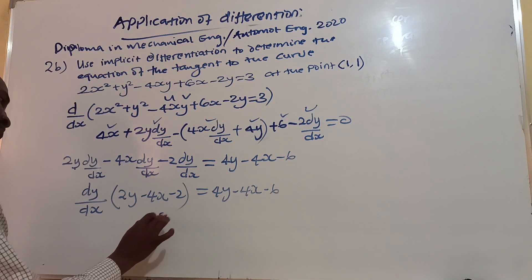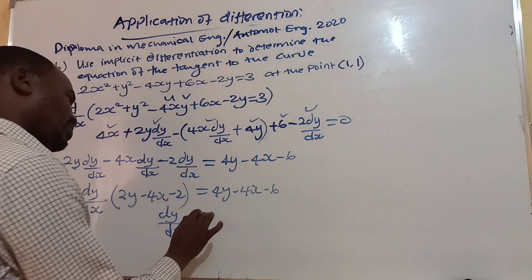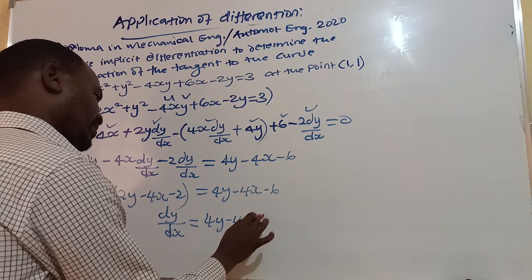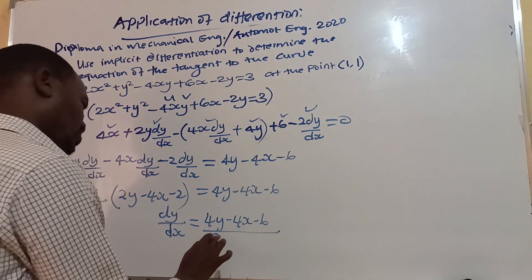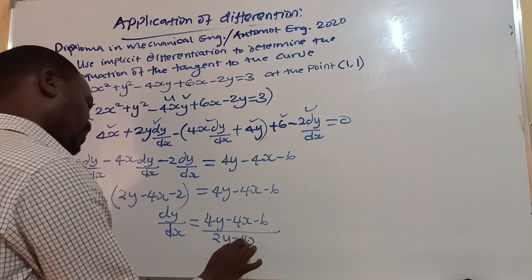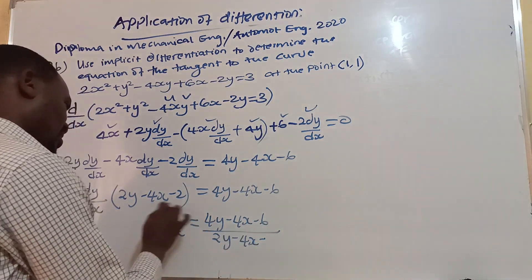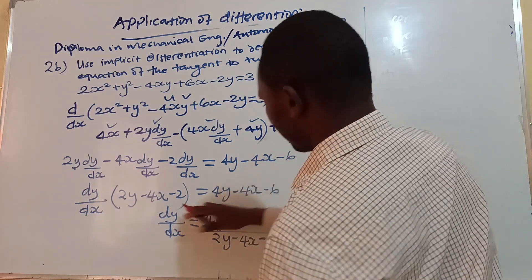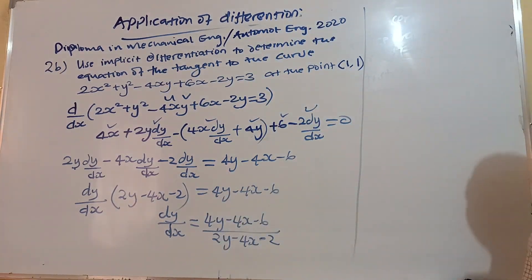Therefore, dy/dx equals (4y minus 4x minus 6) all over (2y minus 4x minus 2). Remember, the derivative dy/dx is the gradient, which is what we need to find the equation of the tangent.